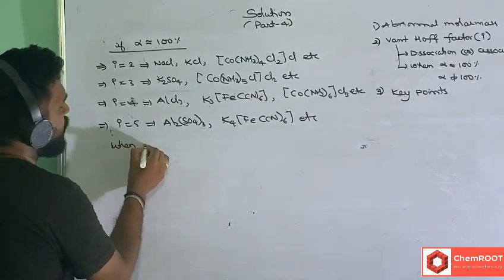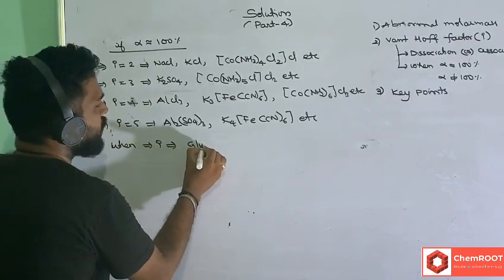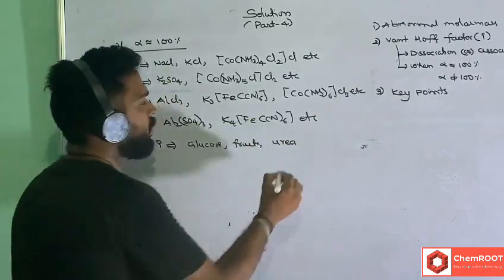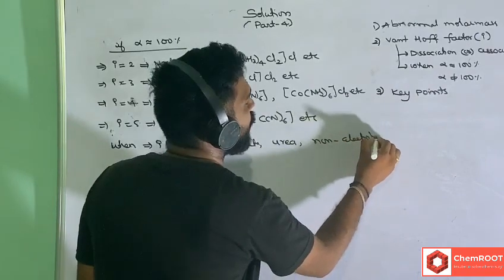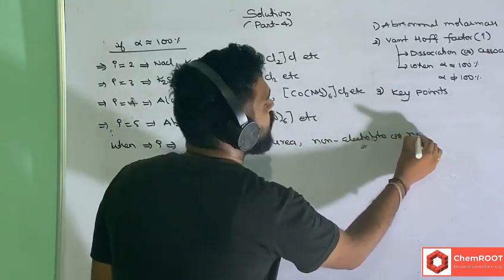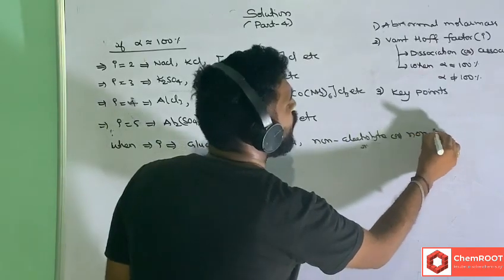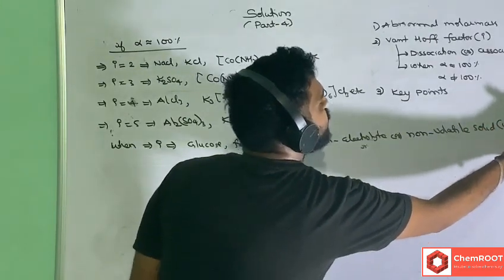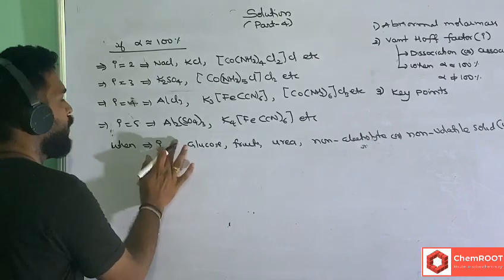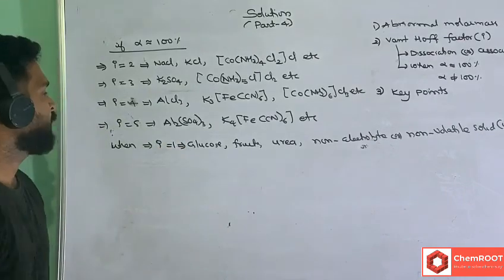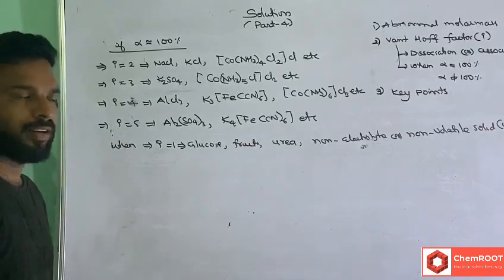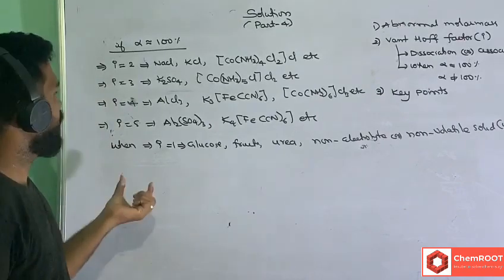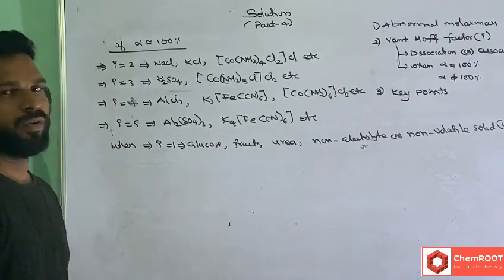When the Van't Hoff factor should be considered as 1: for non-dissociating particles like glucose, fructose, or urea — when a non-electrolyte or non-volatile solid is mentioned in the question without any alpha value, then take i = 1. Glucose, fructose, urea will not further dissociate; in that case we take i = 1. If it is dissociated and alpha is mentioned, by using the alpha value we can find the i value.